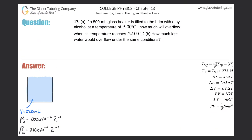Number 17, letter A. If a 500 milliliter glass beaker is filled to the brim with ethyl alcohol at a temperature of 5 degrees Celsius, how much will overflow when its temperature reaches 22 degrees Celsius?